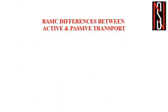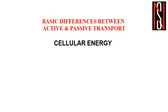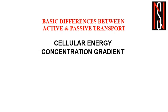Now let us look at the basic differences between active and passive transport. Active transport requires cellular energy because it passes molecules from low to high concentration gradient, whereas passive transport does not require any cellular energy. Active transport flows from lower concentrated areas to higher concentrated areas, whereas passive transport flows from higher concentrated areas to lower concentrated areas.